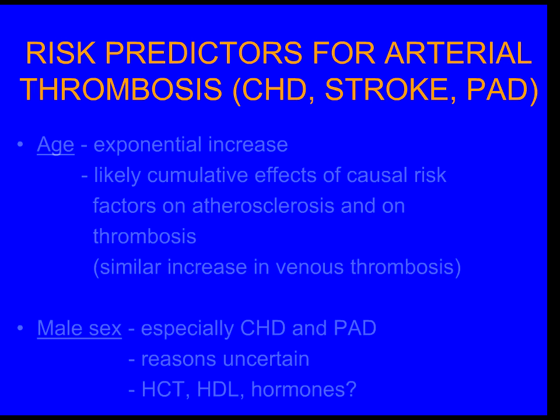If you have atherosclerosis at one site, that makes you more likely to have another atherosclerotic event at another site in the body — it's a systemic disease. Now, what are the risk predictors? Let's start with two we can do nothing about: age and sex. There's an exponential increase with age in coronary heart disease, stroke, and peripheral arterial disease, exactly as you saw for venous thrombosis. It may not be age itself that is causal — it's that with time we get the cumulative effects of the causal risk factors which are progressing atherosclerosis, and also we're becoming more thrombotic.